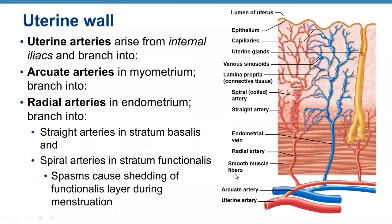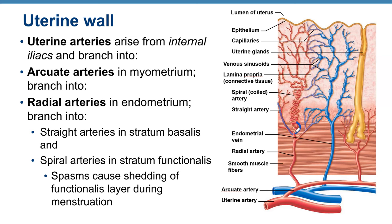Uterine arteries supply blood to the uterus; they arise from the internal iliac arteries and branch into arcuate arteries, then radial arteries within the myometrium. When they reach the endometrium, they branch into straight arteries in the stratum basalis and spiral (coiled) arteries in the stratum functionalis, which then split into capillaries.